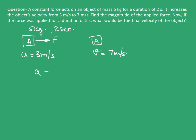So, acceleration of the body here becomes 7 minus 3 upon 2 that is 4 upon 2 equal to 2 meters per second square.